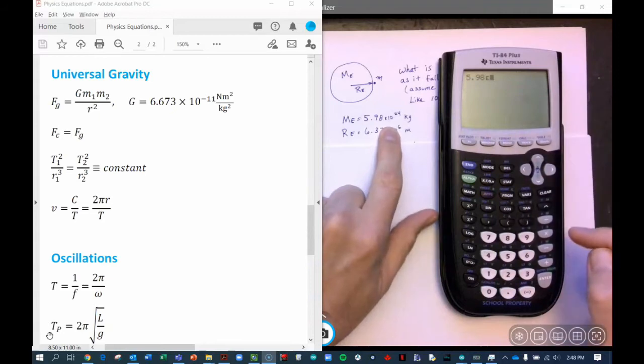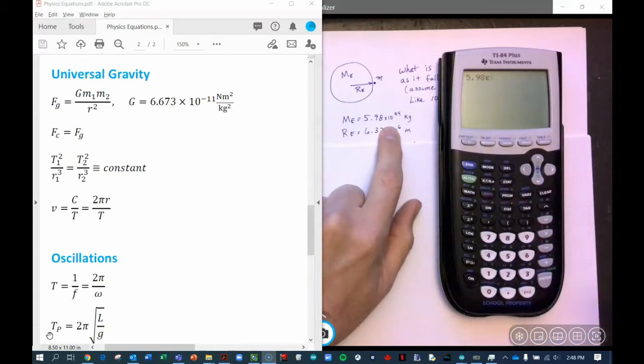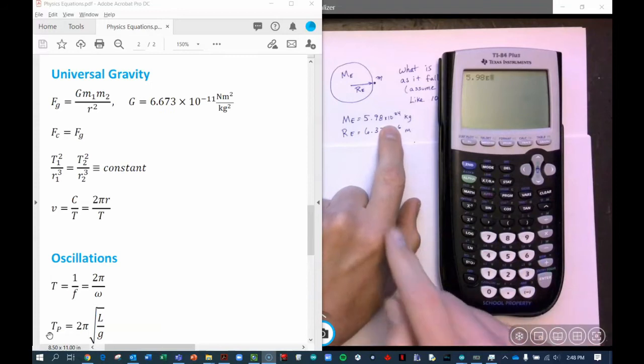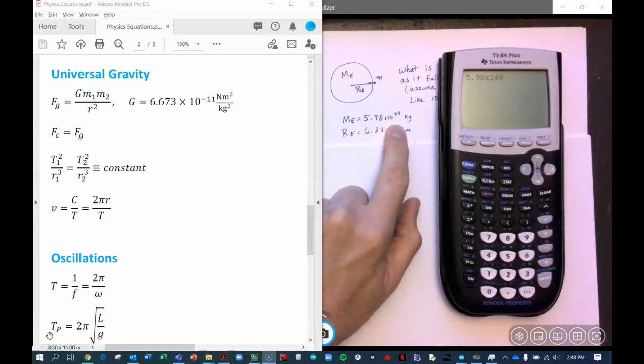Second comma gets us the little E. Now this is not this E, this is not the base of the natural log. This is E shorthand notation for scientific notation. And then we just type in into here the power, which is 24.